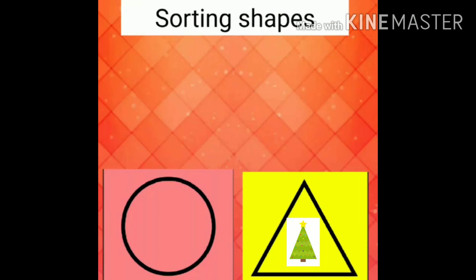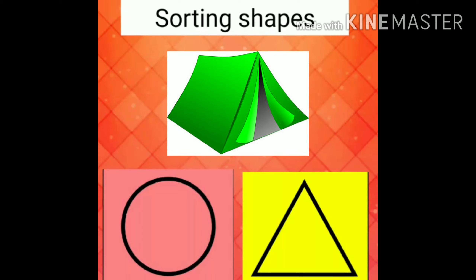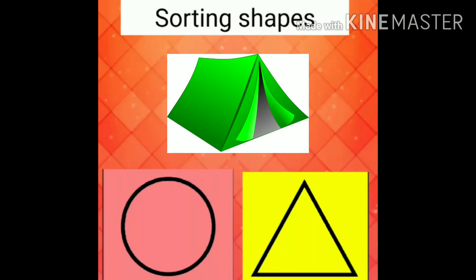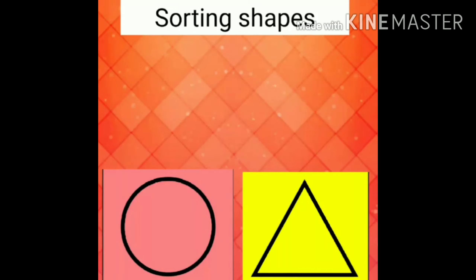What is the next one? What is this? This is a house tent. What is the shape of the house tent? Yeah, you are right. It's triangle again.